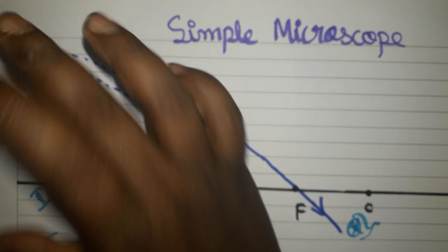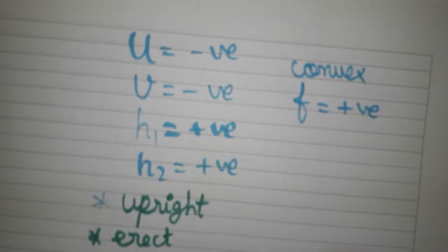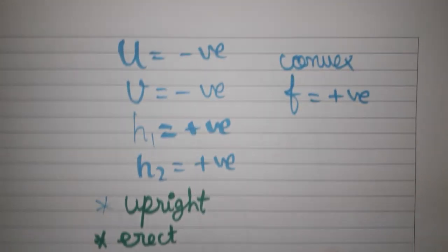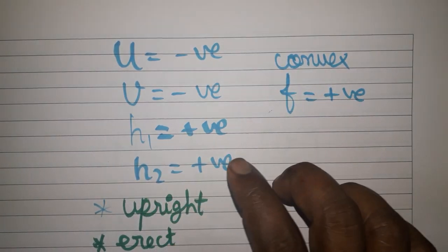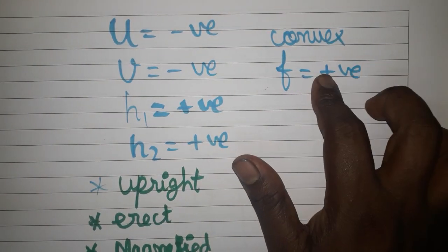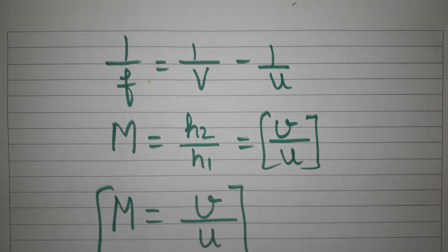Upright image is always virtual and erect. u is negative, v is negative, h1 is positive, h2 is positive. For a convex lens, the focal length is positive.